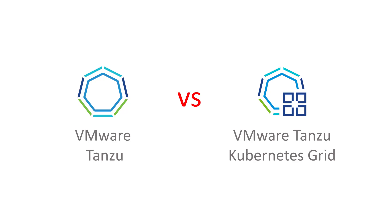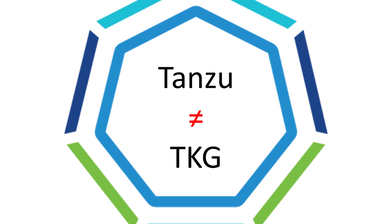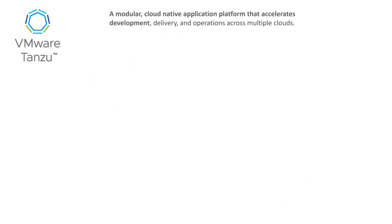So I thought I'd spend the next few minutes and try to clarify what those differences actually are. Firstly, Tanzu does not equal or equate to TKG — they are two very different things. If you do a search for what VMware Tanzu is, you'll find something similar to: 'a modular cloud-native application platform that accelerates development, delivery, and operations across multiple clouds.' When I describe Tanzu to customers, I say VMware Tanzu is a portfolio of products and services.